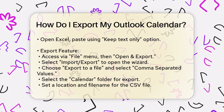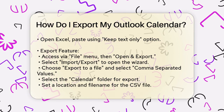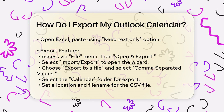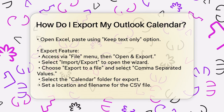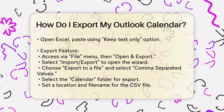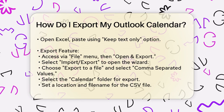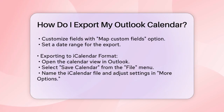Select the Calendar option from the folder list and click Next. Now, choose a location and file name for your CSV file and click Next. You'll have the option to customize the fields you want to export by clicking the Map Custom Fields button. Once you're done, click OK and then Finish. Before the export starts, you'll be prompted to set a date range. Enter your start and end dates, and Outlook will export all the tasks and appointments within that range.